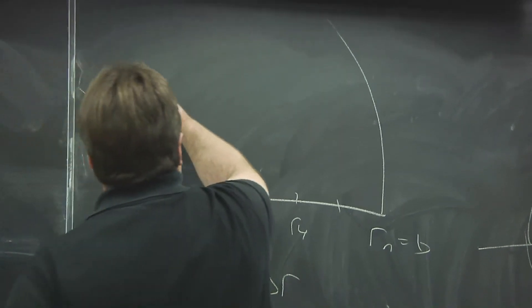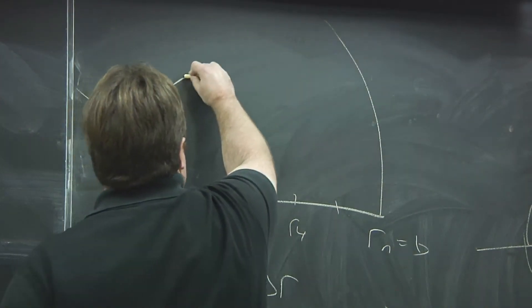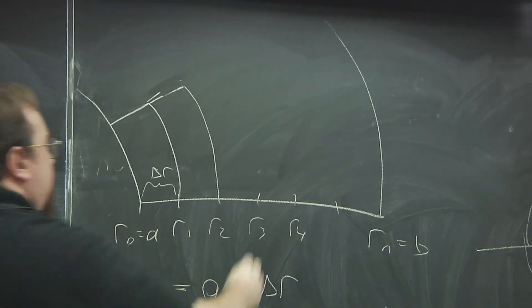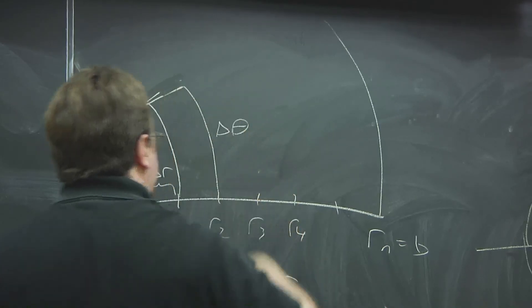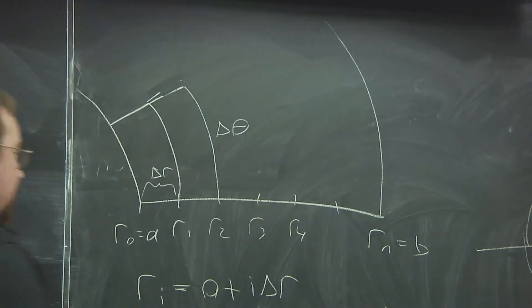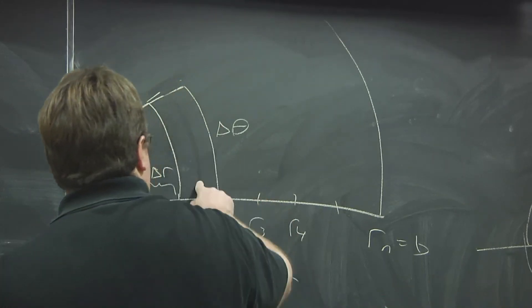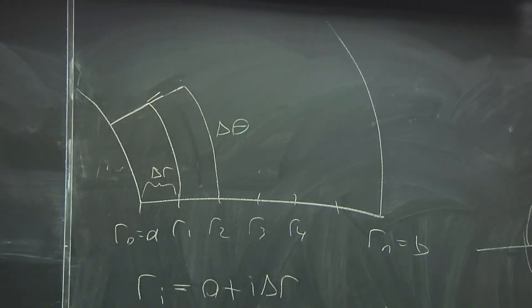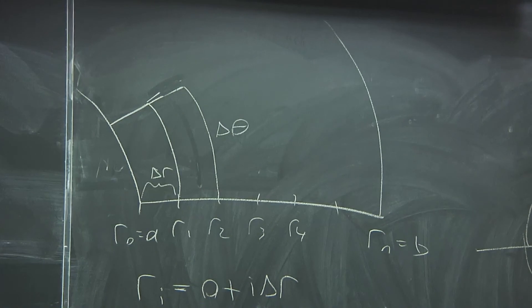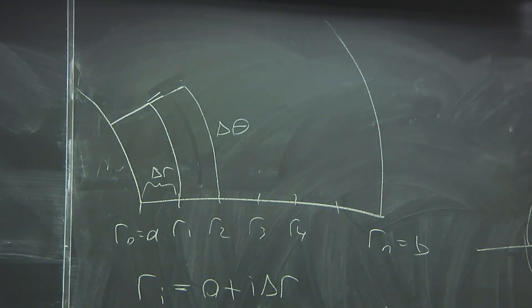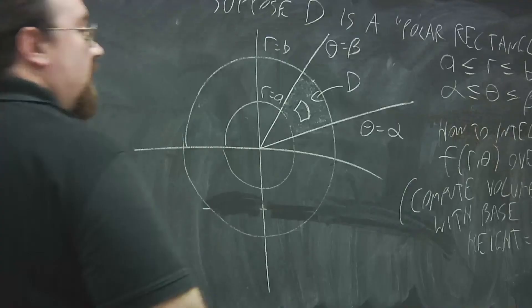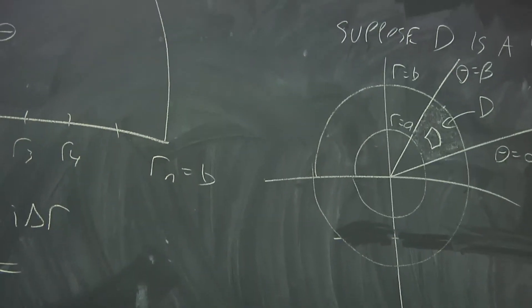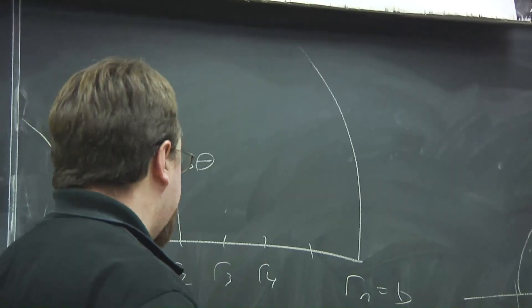Now if this is one of these polar rectangles, the angle that it's sweeping through is delta theta. Then to get the area of this, what formulas, like from your trig class, do we need to use? Student: The circle sector? Instructor: Yeah, the area of the circular sector is what you use. Really what you're going to be doing is taking the difference of the areas of two circular sectors.